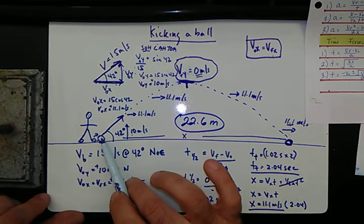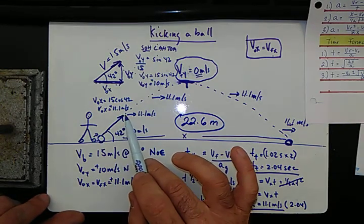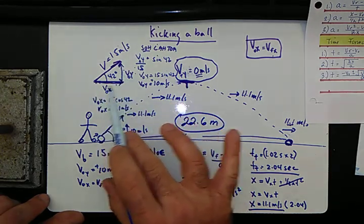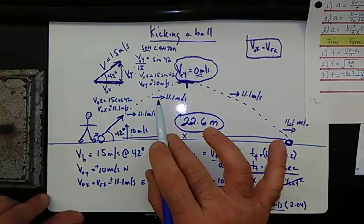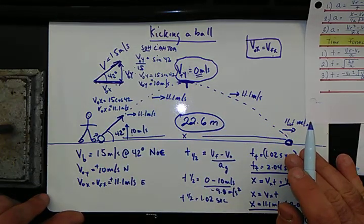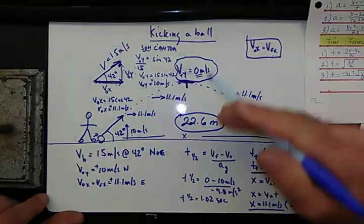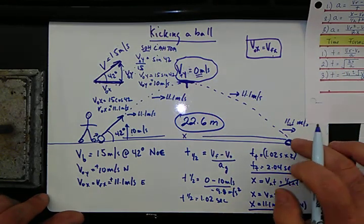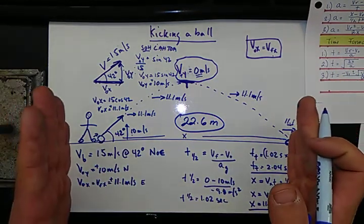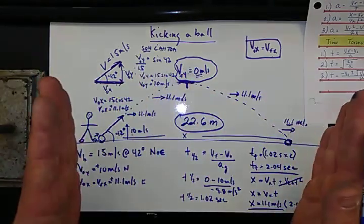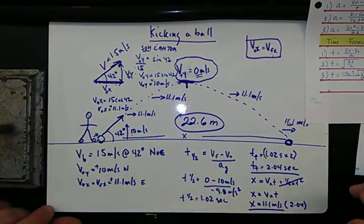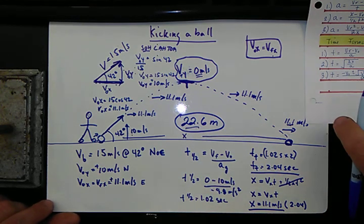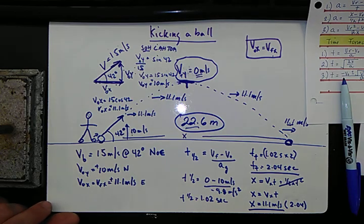So here's the deal. Kick a ball at 15 meters a second at an angle of 42 degrees. You break that up into its x and y components using a little trig. You know for a fact that the x doesn't change, you know that the y does change. And we do have time. We can get the time times the velocity in the x direction. And we ended up with 22.6 meters. We'll do a few practice problems here. But thank you for listening and have a great day.